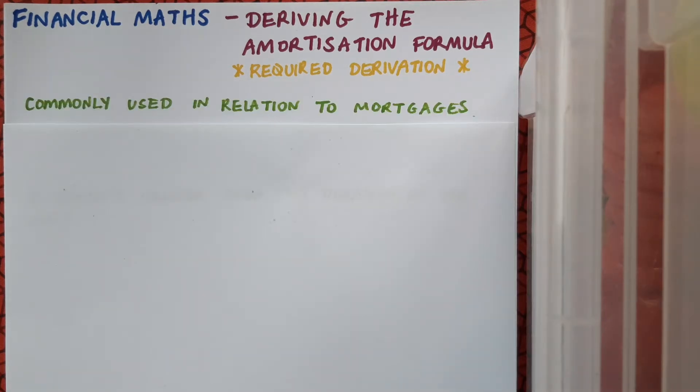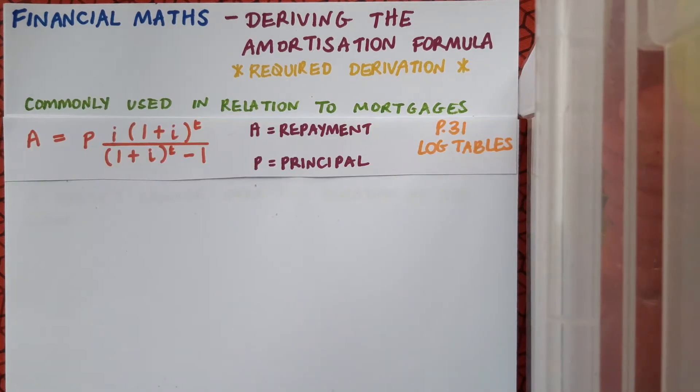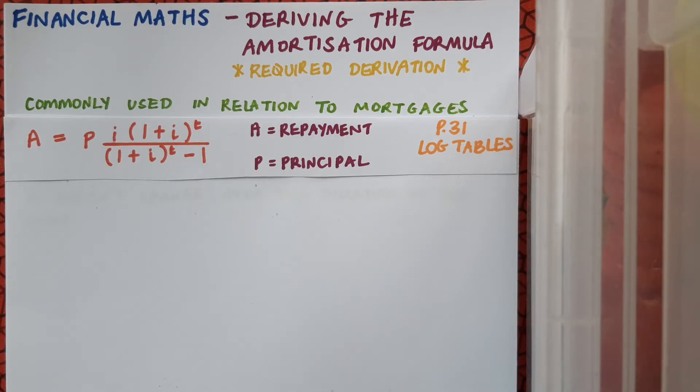You might remember that the amortization formula is commonly used in relation to mortgages, and the formula is on page 31 of our log tables. It's A equals P times I bracket 1 plus I to the power of T over 1 plus I to the T minus 1, and A is the monthly repayments and P is the principal. So when the mortgage is taken out from the bank, P represents the total amount of the mortgage, and then A is how much you're paying back every month.